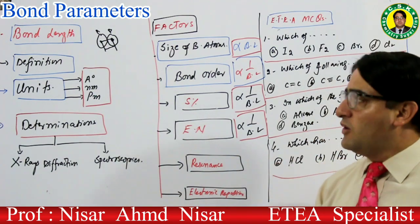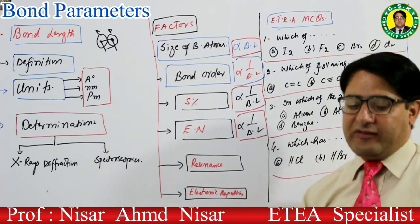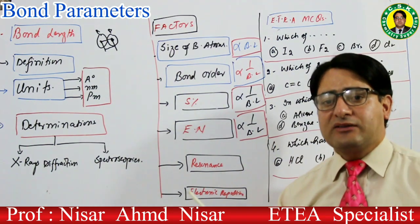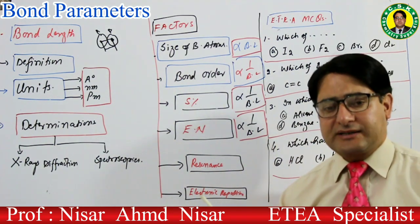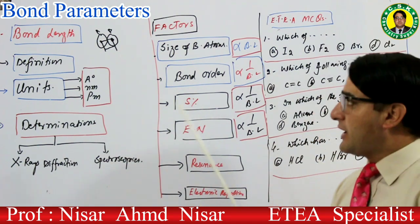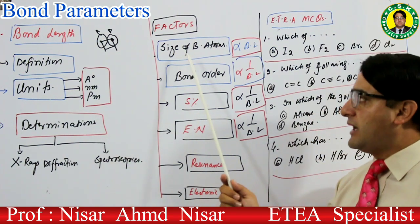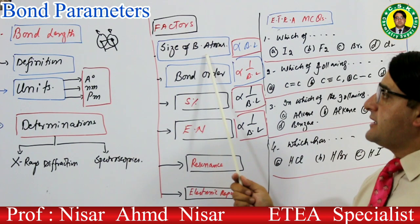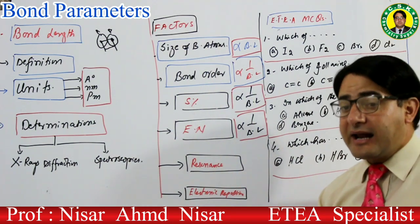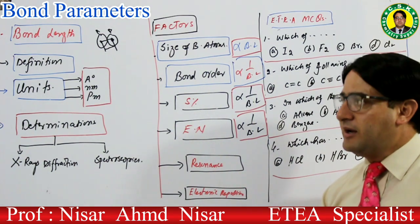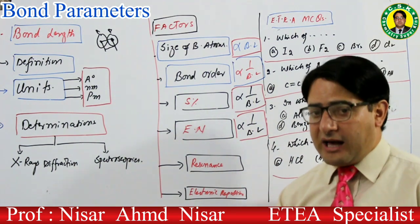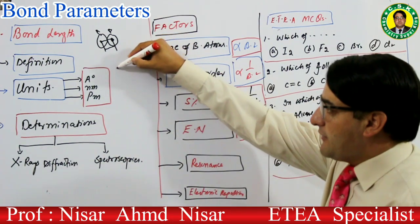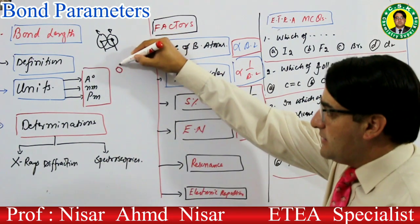اب factors پہ آتے ہیں — کون کون سے factors bond length کو affect کر سکتے ہیں؟ پہلا factor: size of bonded atoms۔ Bonded atoms کے size کے ساتھ bond length کا direct relation ہوتا ہے — bonded atom کا size بڑا ہوگا تو bond length زیادہ ہوگی۔